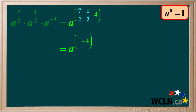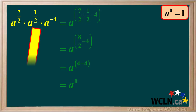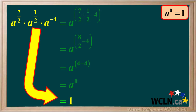7 over 2 plus 1 over 2 is equal to 8 over 2, which equals 4. And 4 minus 4 is equal to 0. Since a to the power of 0 is equal to 1, a to the power of 7 halves times a to the power of 1 half times a to the power of negative 4 is just equal to 1.